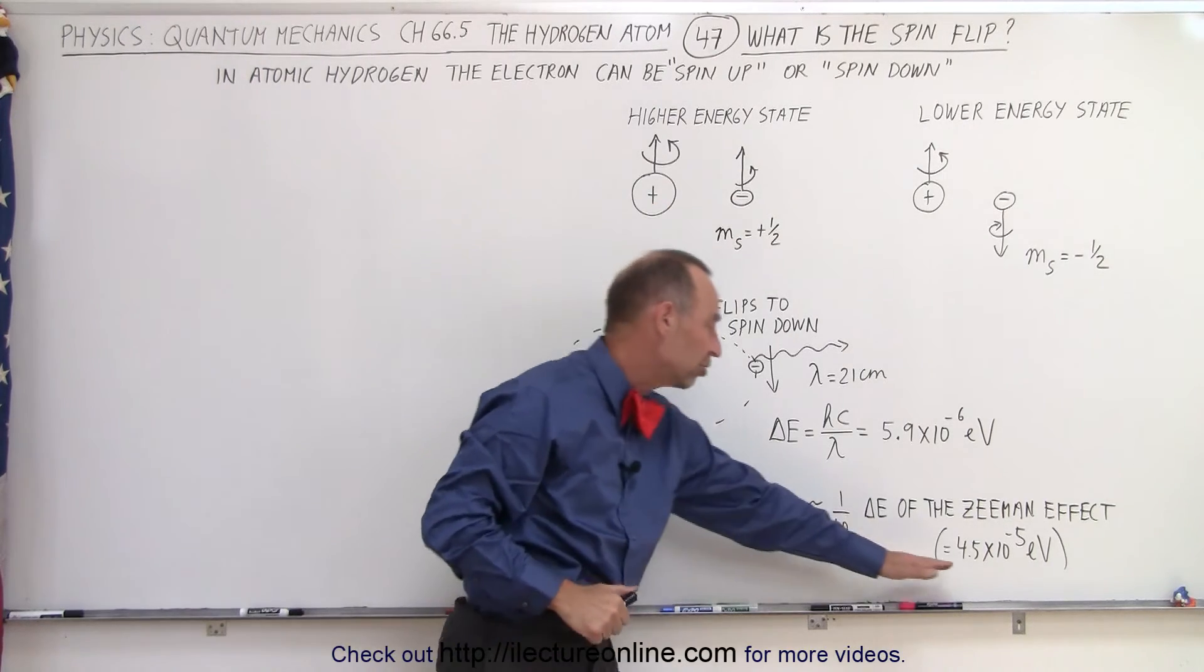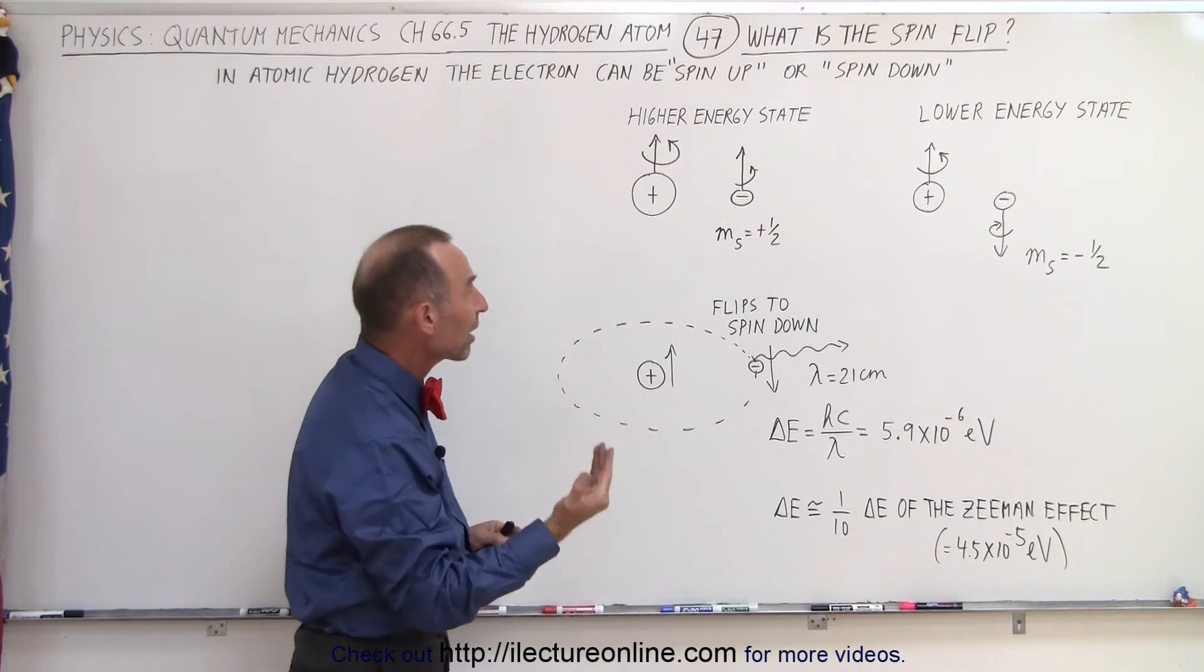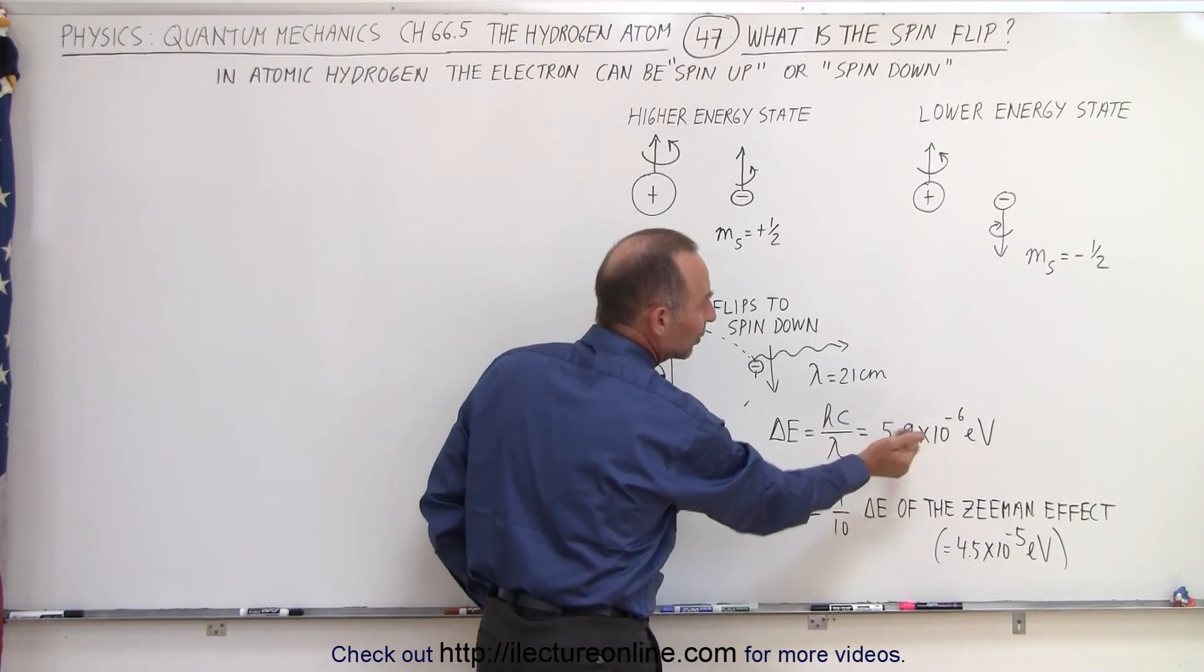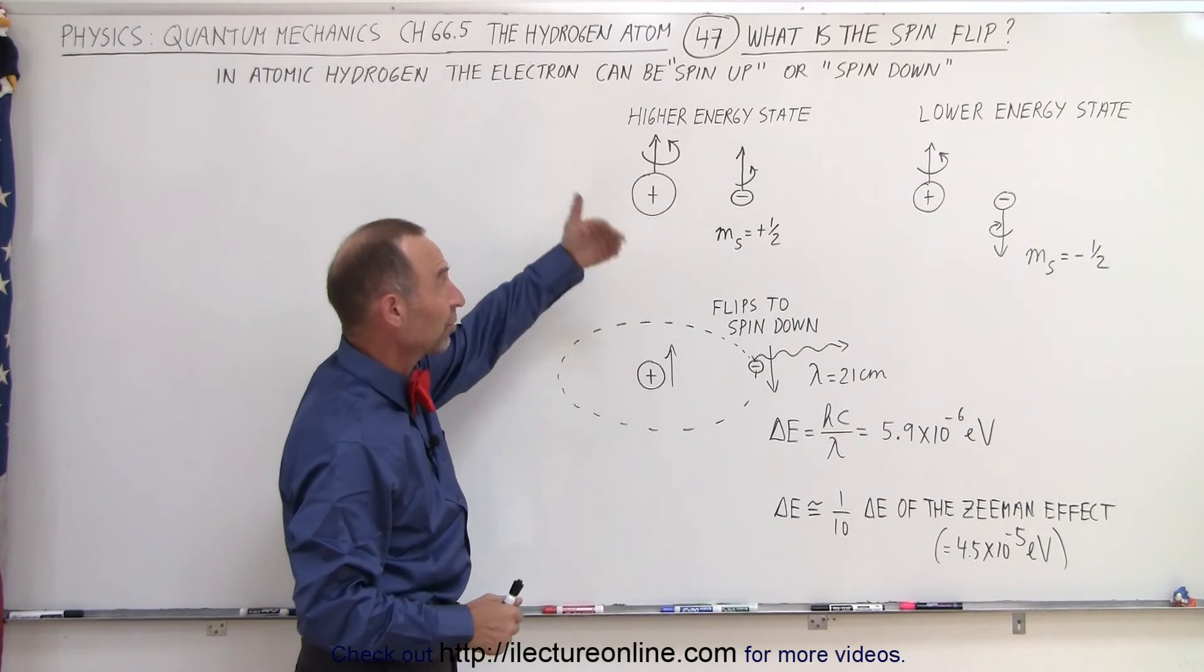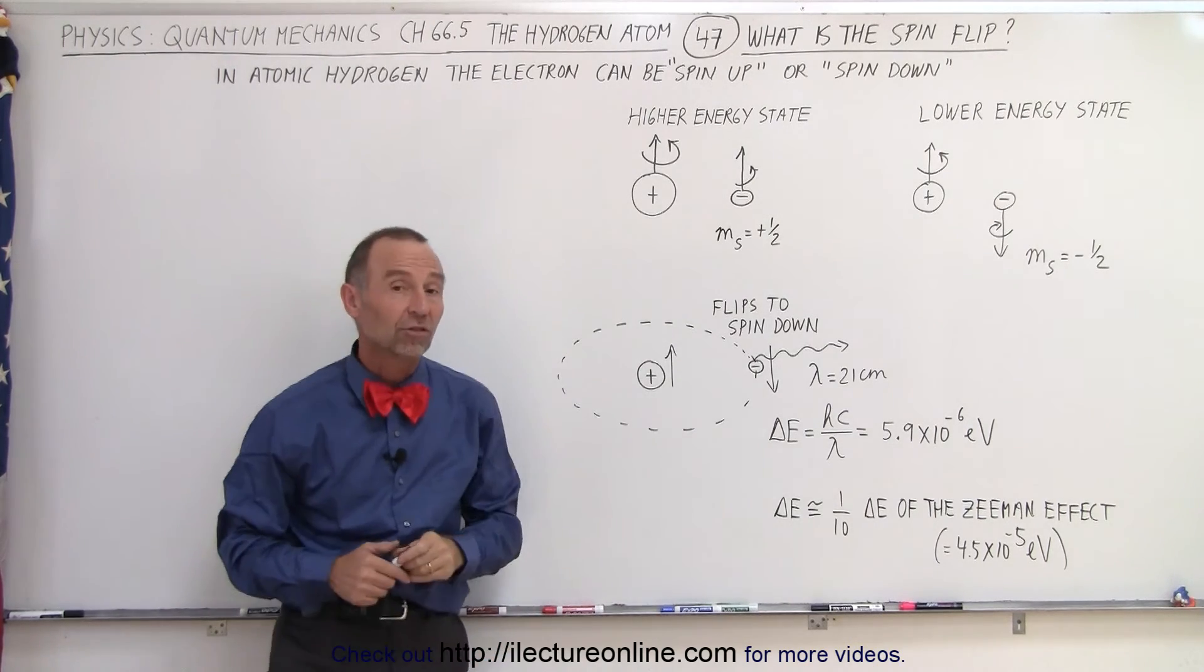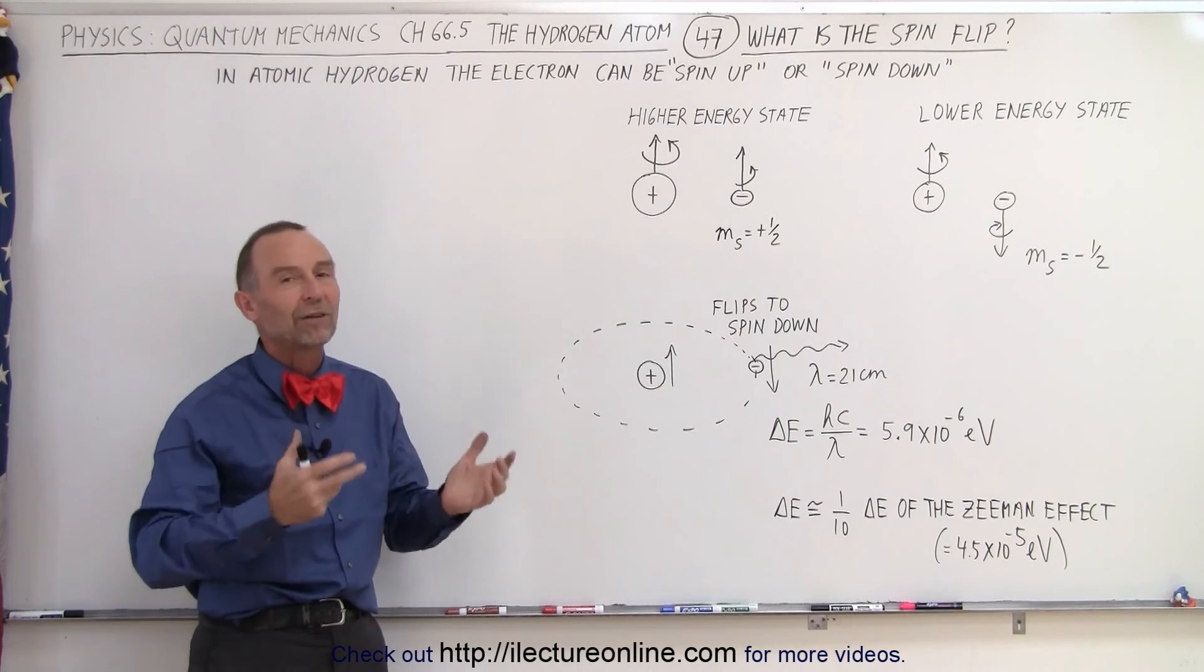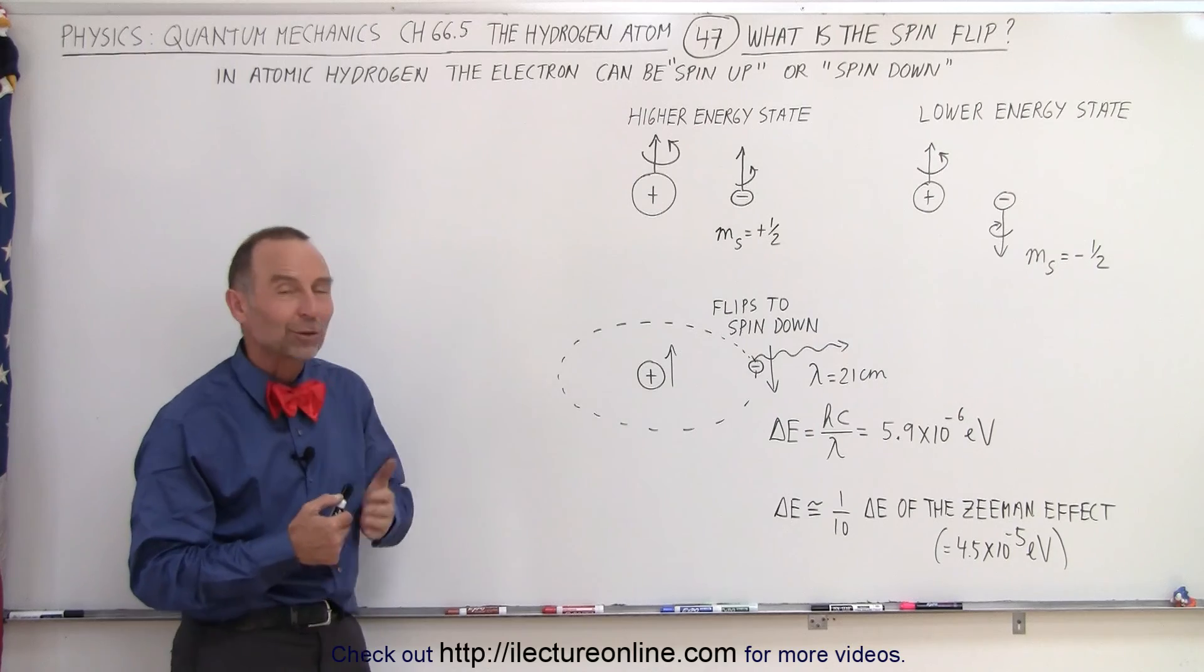That caused an energy difference of about 4.5 times 10 to the minus 5 electron volts. But the interaction between the spin of the proton and the spin of the electron, that is about 1 tenth as much with an energy difference of 5.9 times 10 to the minus 6 electron volts when the electron jumps from spin up to spin down. And so going from a higher energy state down to a lower energy state. But again, there's a difference there, and the electron can be in either one of the two states, again causing slight differences in the wavelengths emitted when the electrons jump from one to another. And that's how we know these things.